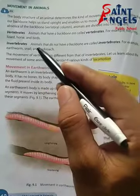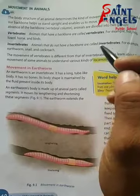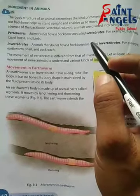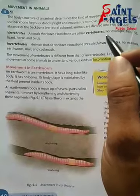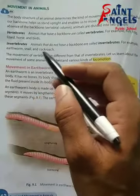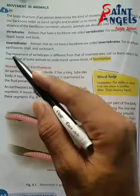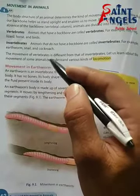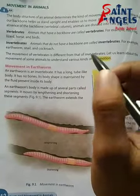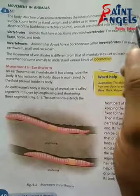Second: invertebrates. Animals that do not have a backbone are called invertebrates. Jin animals ki backbone nahi hoti hai unhe invertebrates kaha jata hai. For examples: earthworm, snake, and cockroach — ye sab invertebrates ke examples hain. The movement of vertebrates is different from that of invertebrates. Vertebrates ka movement, invertebrates ke movement se different hota hai.